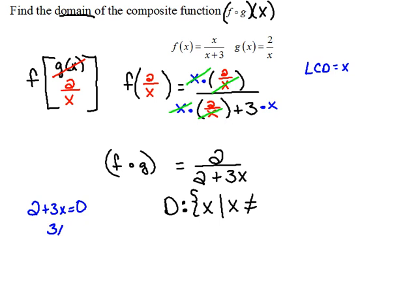So if I continue solving this, moving 2 to the other side, and then dividing both sides by 3, we find out that we have a hole in the domain at negative 2 thirds. So we have the set of all x's such that x cannot equal negative 2 thirds.